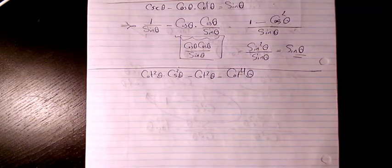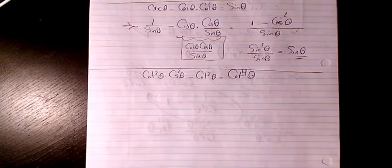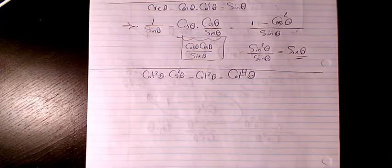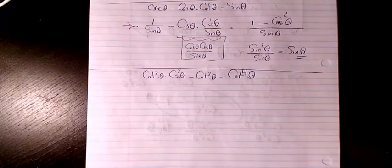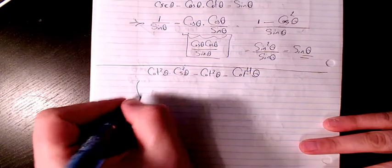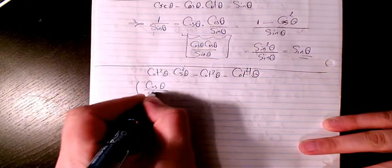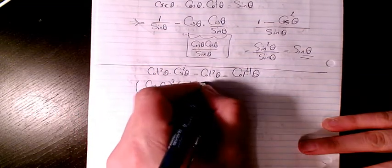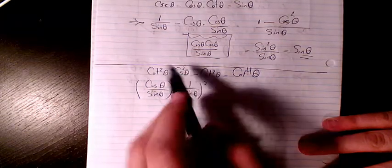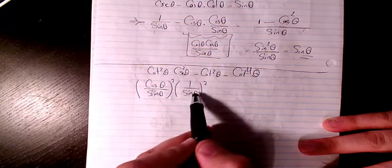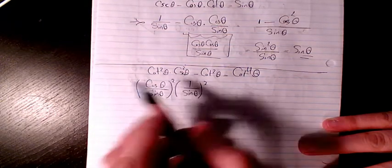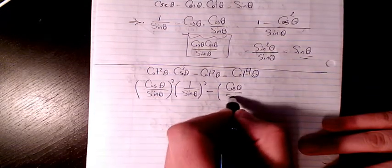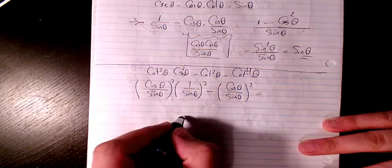In this video we have cot²θ · csc²θ - cot²θ and we will show it equals cot⁴θ. We convert: cosecant becomes 1 over sine theta, and cotangent becomes cosine theta divided by sine theta. Cotangent again can be written as cosine divided by sine.